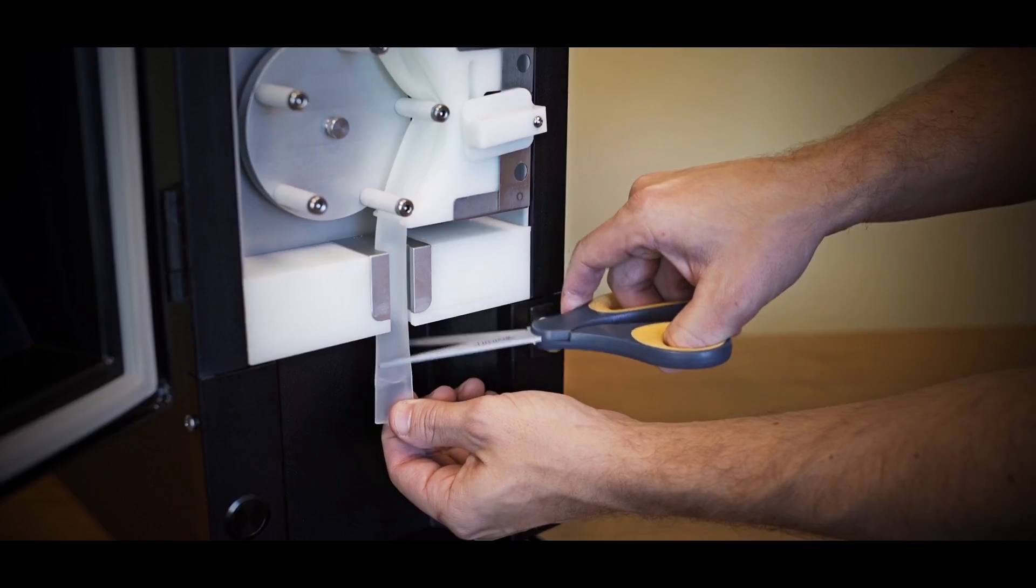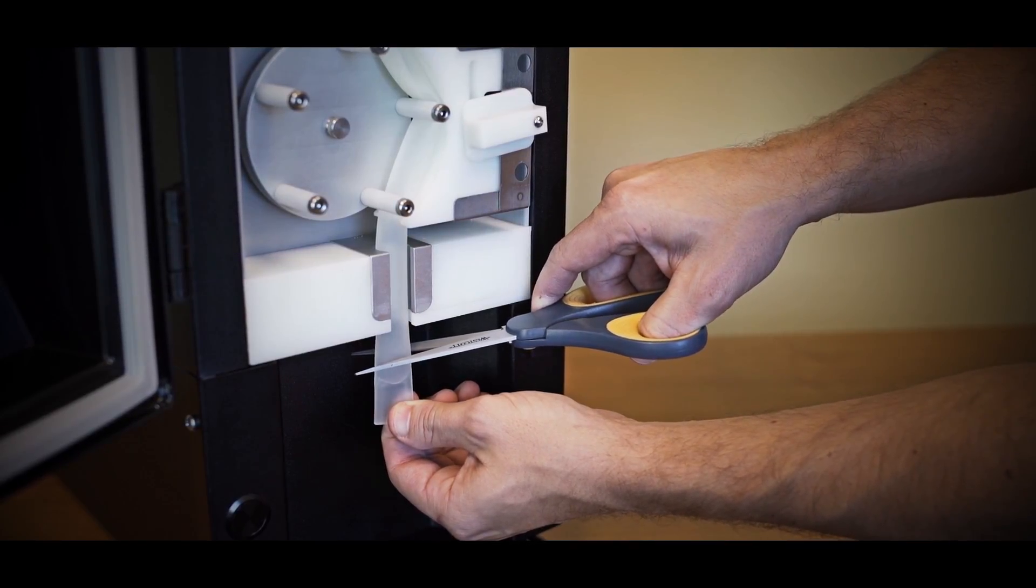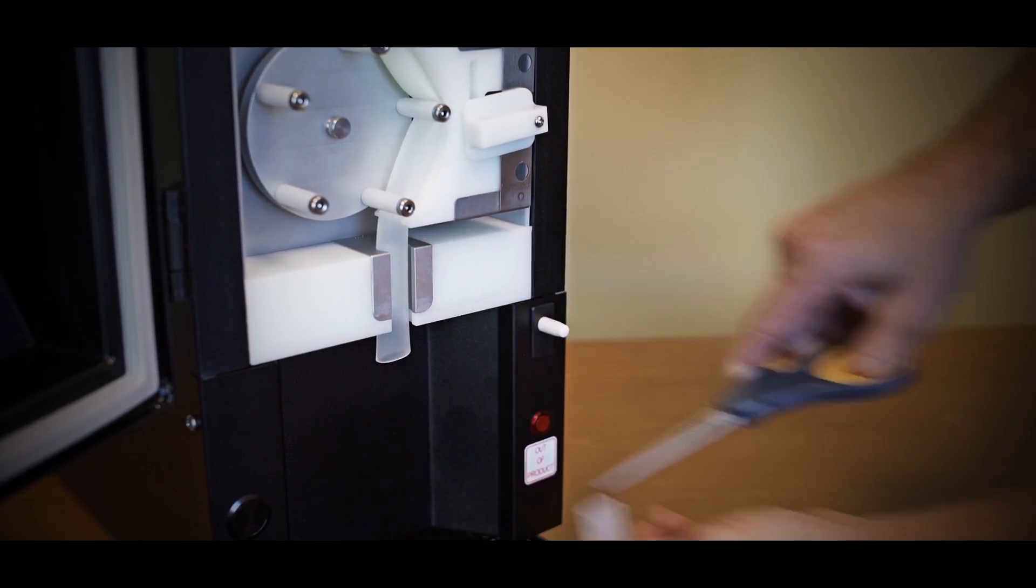Cut the tube with scissors about one quarter to one half inch below the exit chamber, just below the refrigerated block.